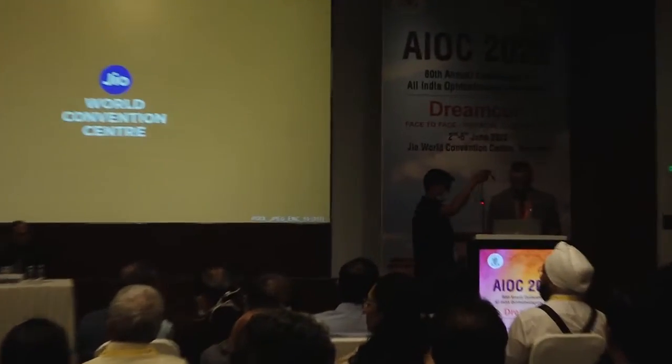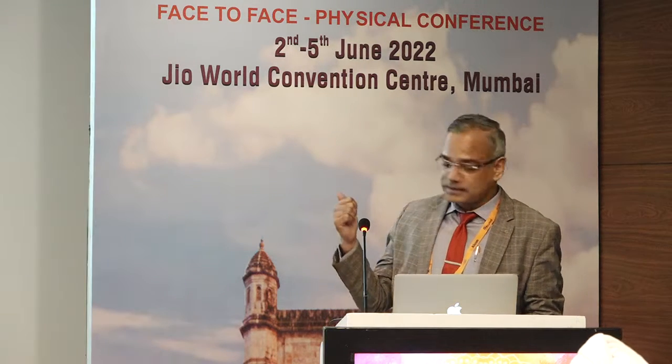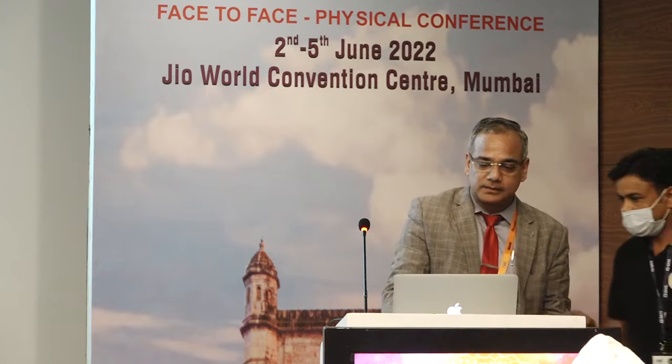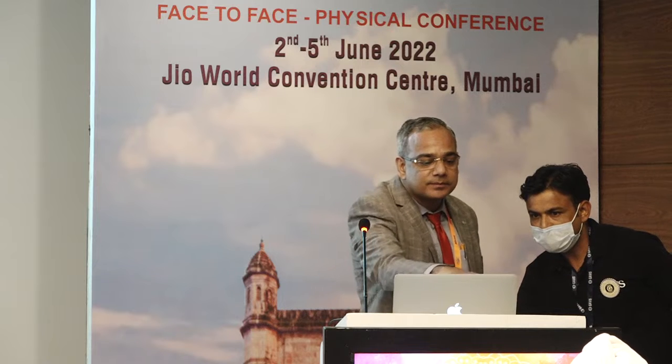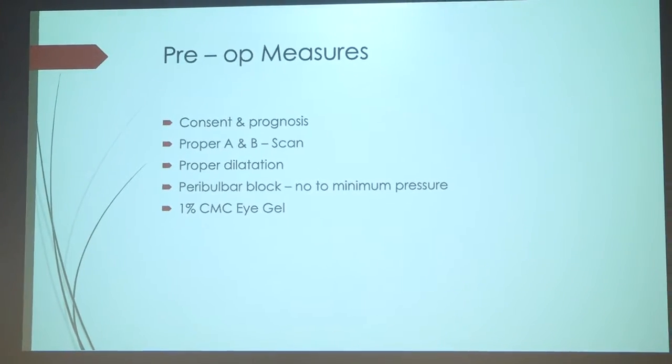Dr. Arvind Maurya, Additional Professor and Head at AIIMS Bibi Nagar, Hyderabad, speaks on SICS and supra-hard cataract. Preoperative measures include consent, proper A and B scan (B scan essential since fundus cannot be seen), proper dilation — using B-hacks, Gupta's ring or iris hooks if needed. SICS is done under peribulbar block with no to minimal pressure. CMC eye gel is preferred to prevent corneal abrasion for a clear view. Incision size is 6–6.5mm frown shape, supero-temporal, now shifting to nasal side. No bridal suture is used.